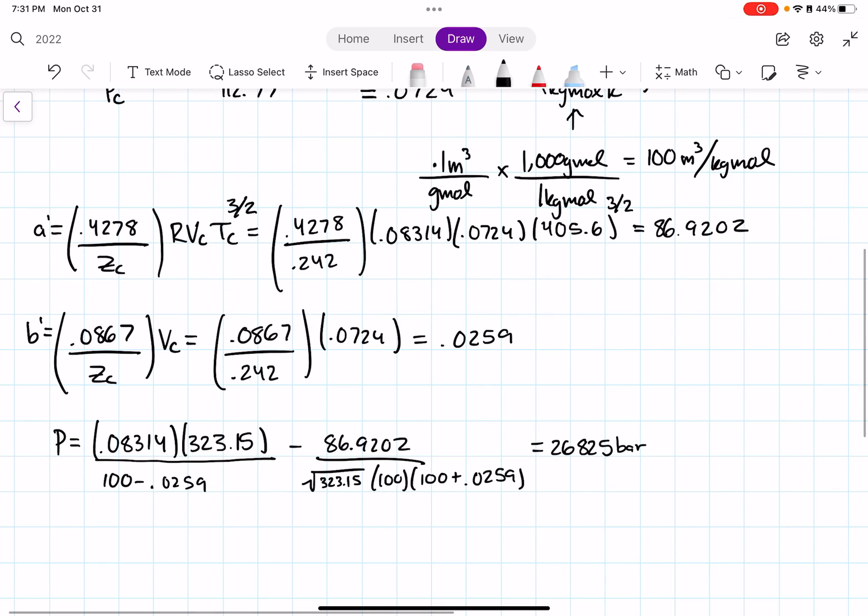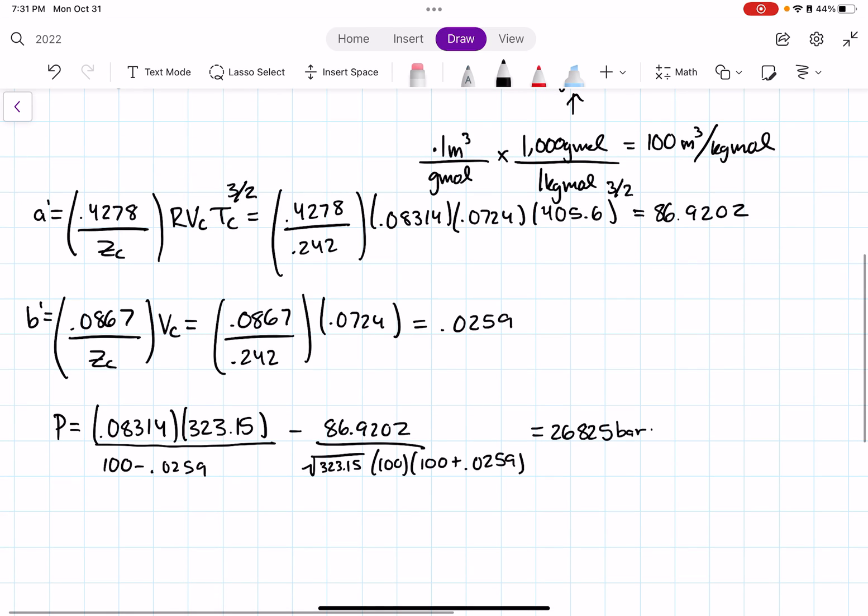However, our problem statement doesn't want it in bar. They want it in kilopascals. So I know that I just have to move the decimal point. This is 0.26825 bar. And I know that in order to get it into pascals, I just have to move it five spots over: one, two, three, four, five. And then that would be 26,825 pascals. And then to convert that into kilopascals, it'll just be 26.825 kilopascals. And that's it for this example on how to use the Relic-Kwong equation of state.